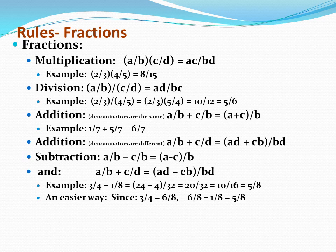Division. Here we would multiply A times D divided by B times C. This is equivalent to flipping the D to the top and multiplying. So an example would be two-thirds divided by four-fifths. We would rewrite it as two-thirds times five-fourths equals ten-twelfths equals five-sixths.